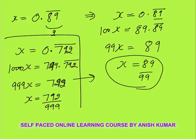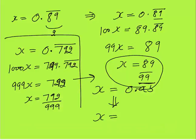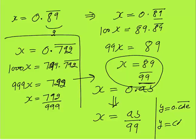Now you can see the shortcut. The shortcut applies only when all digits after the decimal have a bar. If x equals 0.AB bar — bar on both digits — then x equals AB by 99. Two digits gives two nines. Similarly, if y equals 0.CDE bar — all three digits with a bar — then y equals CDE by 999. Three digits gives three nines.